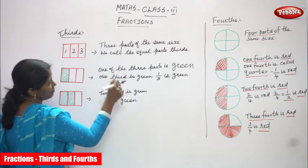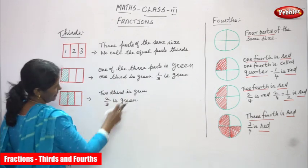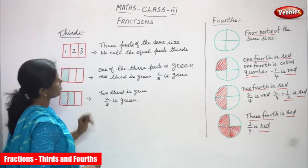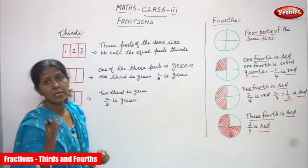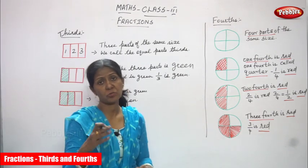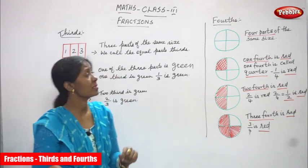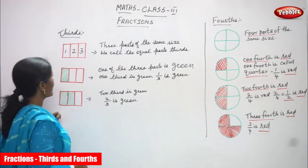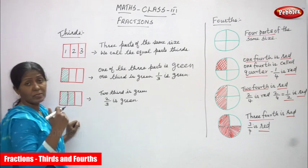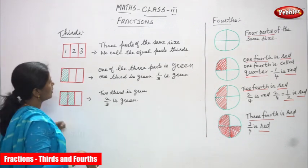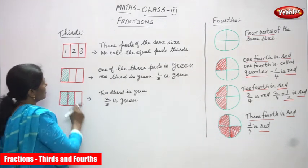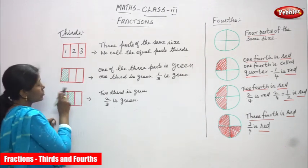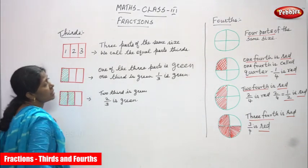One third is called one by three — that is a fraction. Look at this object: I cut it into three equal parts. Equal parts are called thirds. All the parts are the same size. One of the three parts is in green color — I have taken only one part and shaded it green. So one third is green.